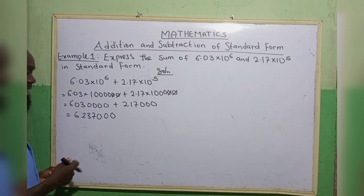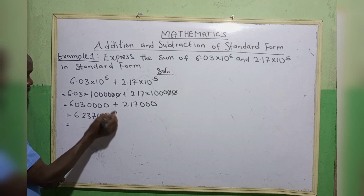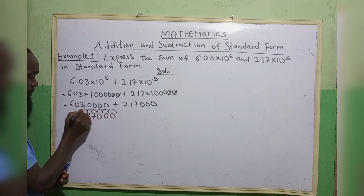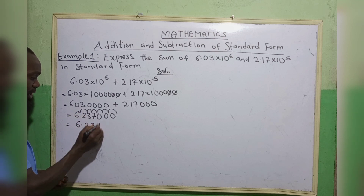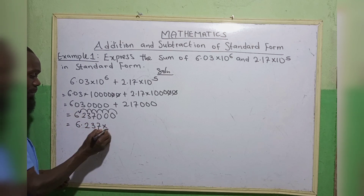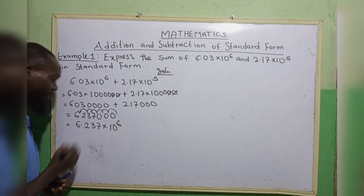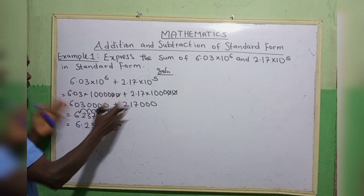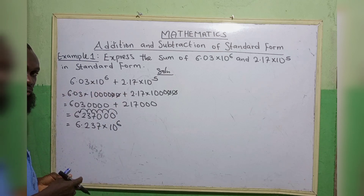Now, to express this in standard form, you are going to move your point to the back of the first digit number — 1, 2, 3, 4, 5, 6. So we have 6.237 multiplied by 10 to the power 6. So this is the standard form. This is by changing everything to ordinary number then changing back to standard form.